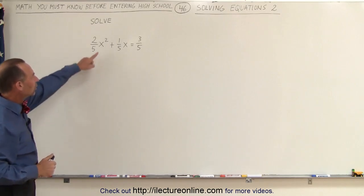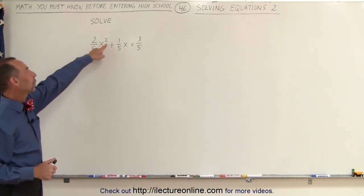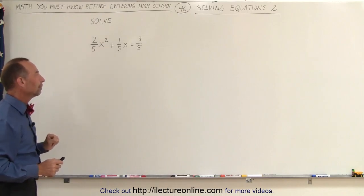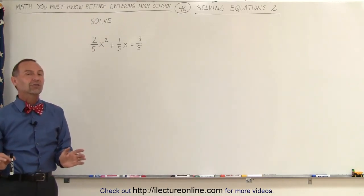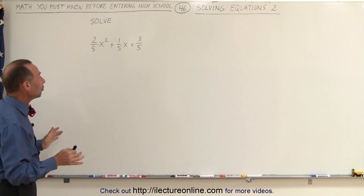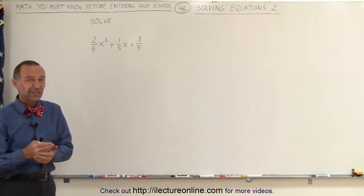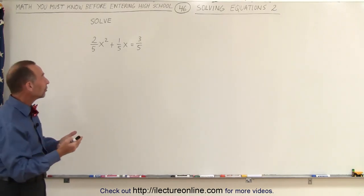Notice also that this is a quadratic equation because it has a square term, x to the second power. It also has fractions. And whatever type of equation we have, the first thing we should always do is get rid of parentheses, decimals, and fractions.